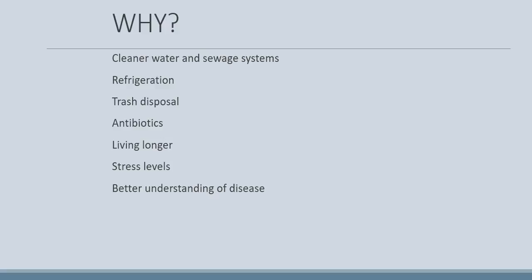We also have refrigeration now, which allows us to keep food at safe temperatures. In the early 1900s some people had ice boxes, but that was not the same as refrigeration. We also have trash disposal now. In the early 1900s most places did not have trash disposal — trash was put out on the streets or left out, which attracted rodents and sometimes spread disease.